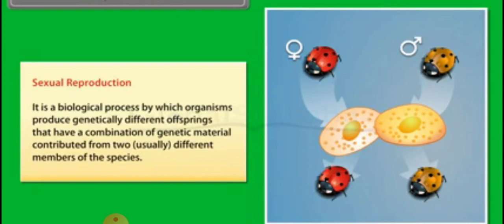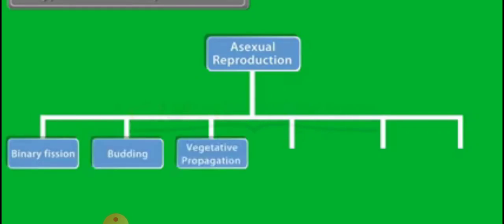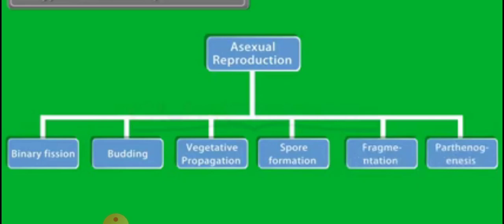Now talking about the various modes of asexual reproduction, asexual reproduction includes various kinds of fission that is binary and multiple, budding, vegetative propagation, spore formation, fragmentation and parthenogenesis.